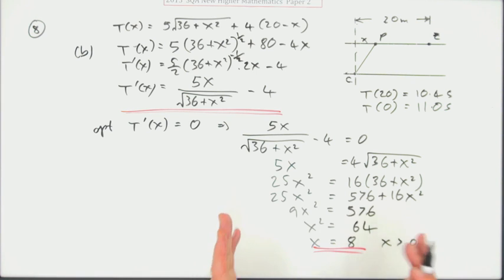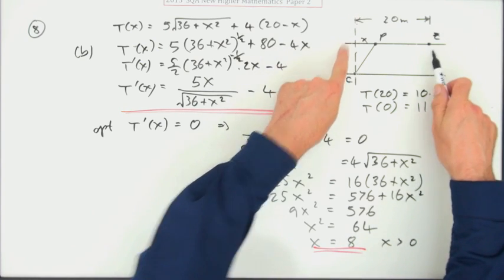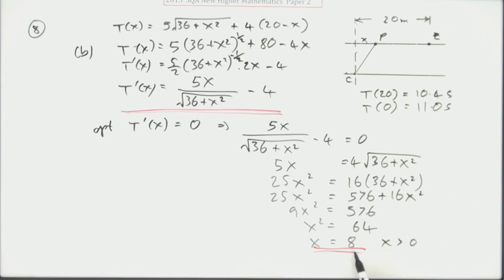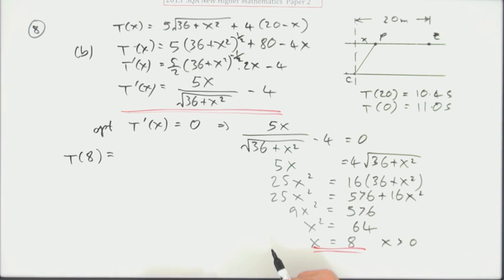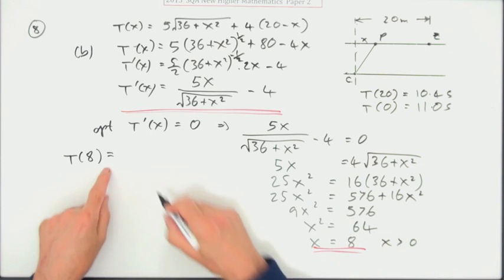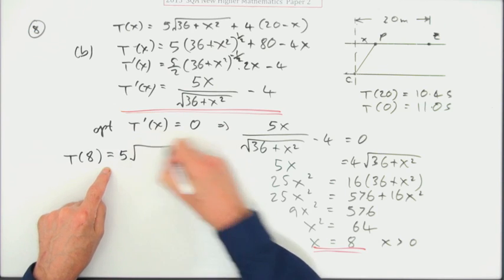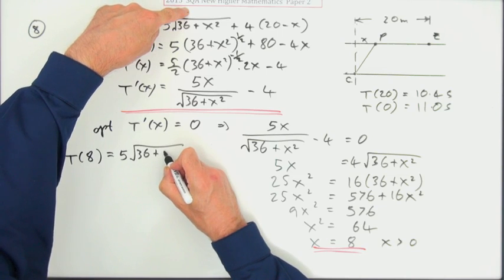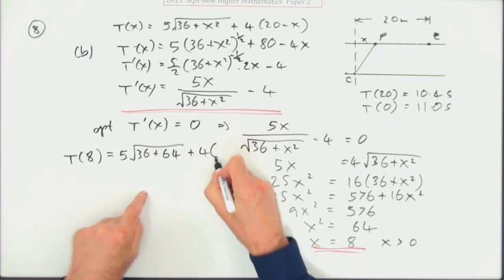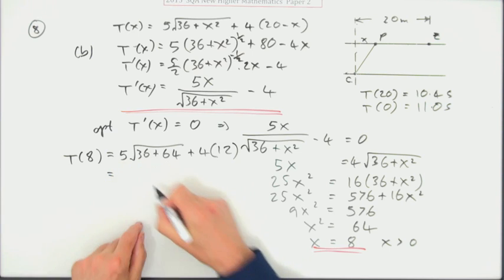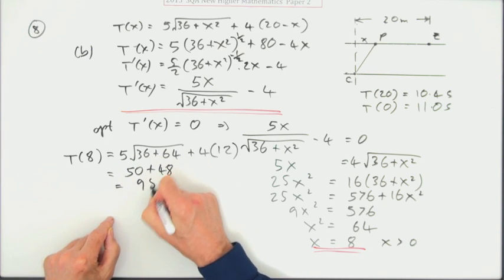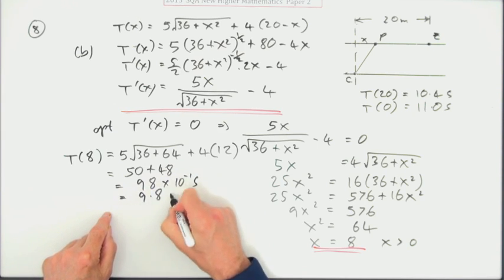It comes to business of which minimizes it. Strictly speaking, in a question like this where there's an interval, it's sufficient just to determine where the stationary point is and not what its nature is, because its value will speak for itself. So I'll work out T at 8 and then compare with these two. Putting it back into this, you've got 5 times the square root of 36 plus 8 squared, which is 64, plus 4 times 20 minus 8, which is 12. That's 50 plus 48, 98. Again, that's tenths of a second, so 9.8 seconds.